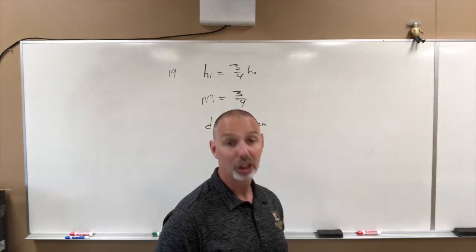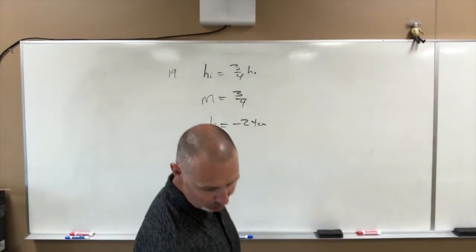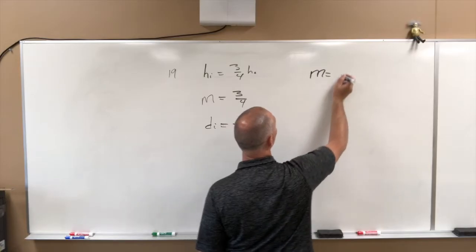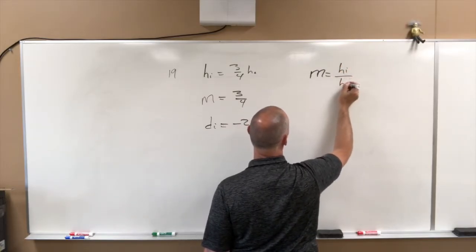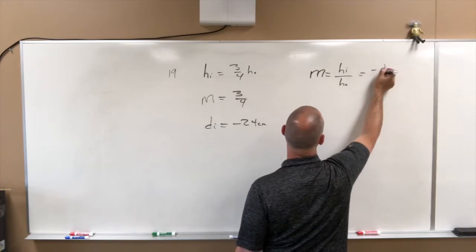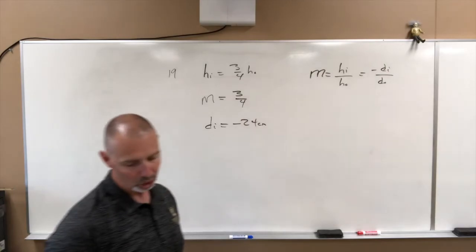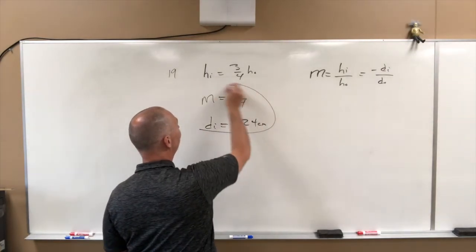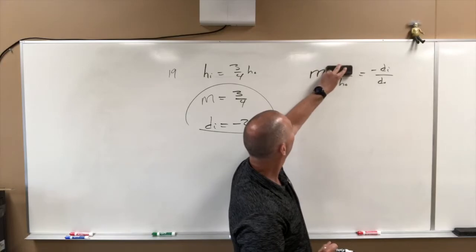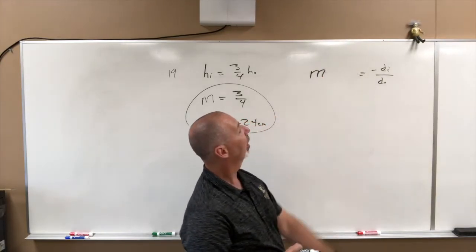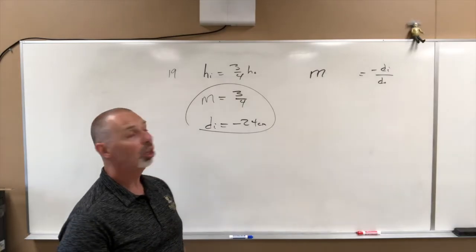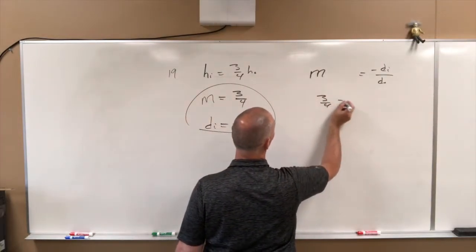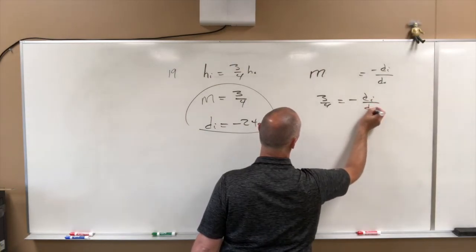So convex mirror is needed to produce an image that is three-fourths the size and located 24 centimeters behind the mirror. That tells us that the image distance is negative 24 centimeters. The question says, what focal length should this mirror have? So the first thing we're going to do is take our magnification formula, which is M equals HI over HO, which equals negative DI over DO.